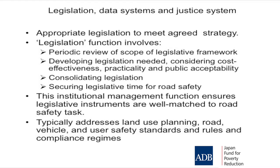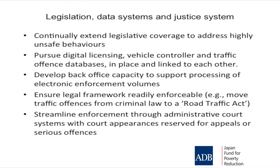You must have your licensing database linked to your courts and police offence database to establish a demerit point system and a linkage between offences and licensing. That's easy to say but it's a big task, and you need to start as soon as possible. If you're going to go into electronic enforcement, the big volumes of data will overwhelm any manual process. You've got to have back-office electronic processing and think through how police will check images in that automated process.